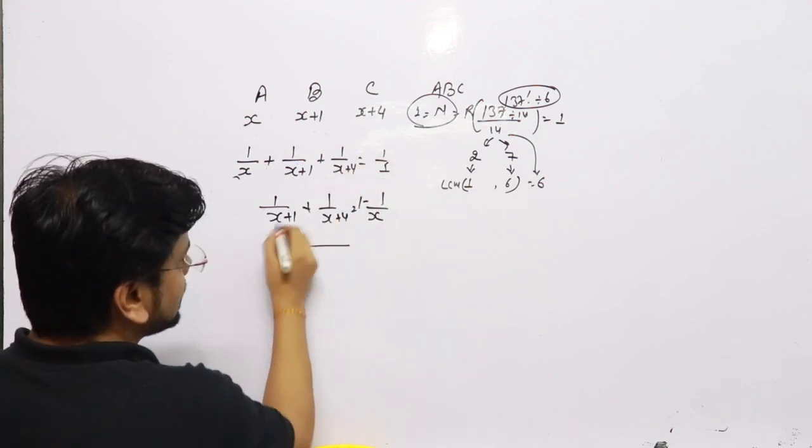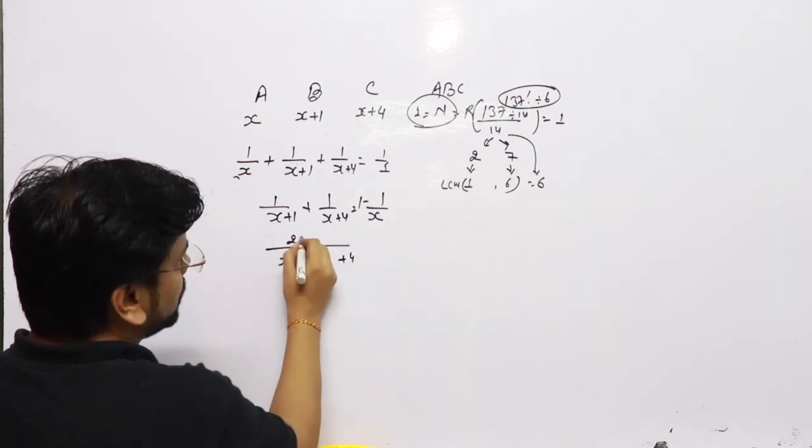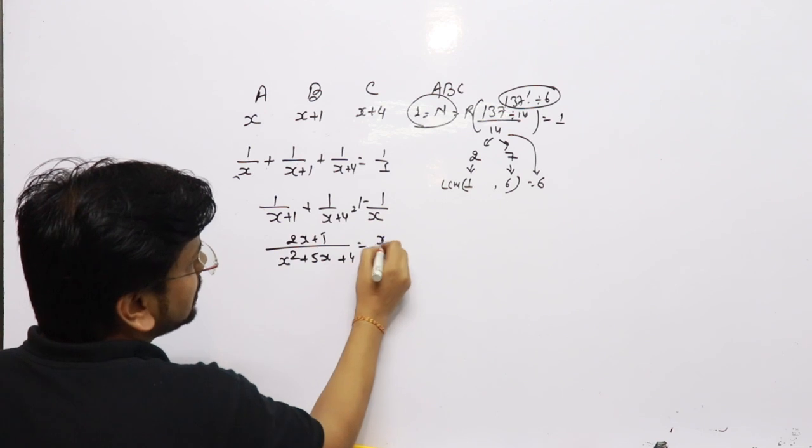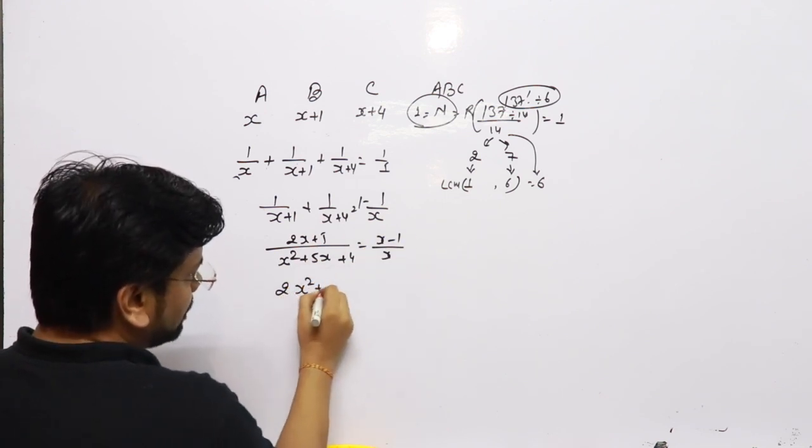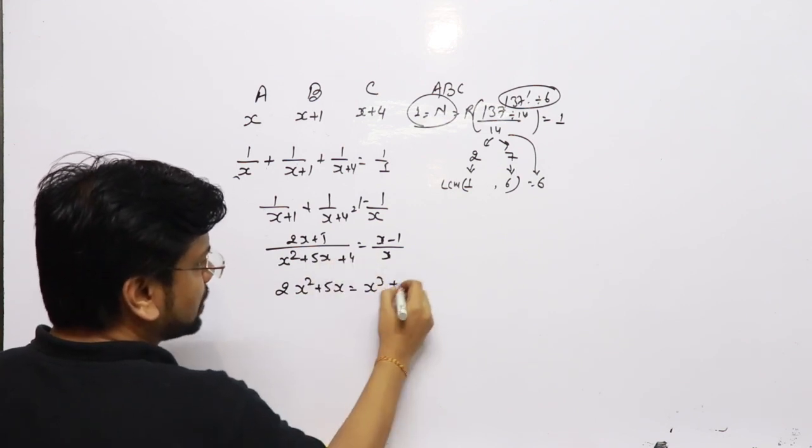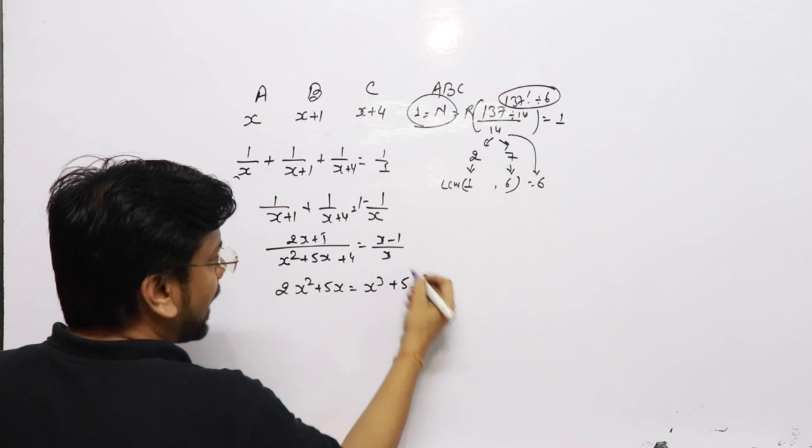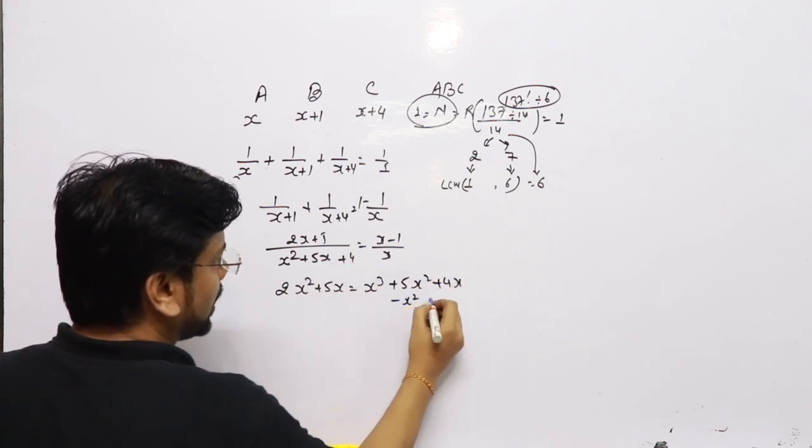This one is x²+5x+4. The summation is 2x+5. And this one is (x-1)/x. So this side we have 2x²+5x. This side we have x³, x²+5x², and we have 4x. With the minus 1 we have -x², -5x, -4.